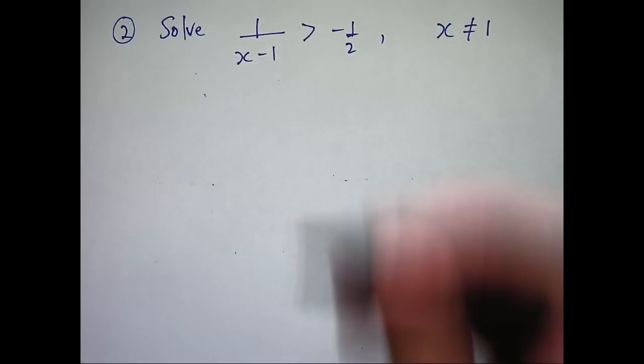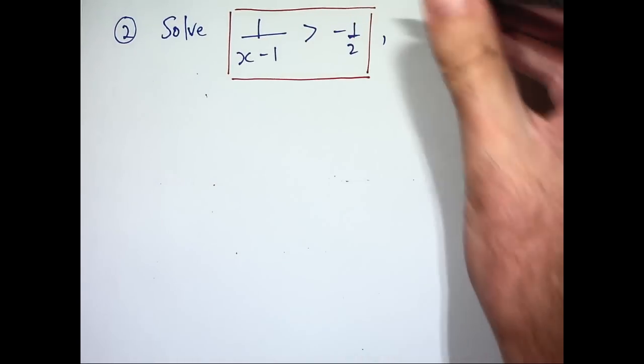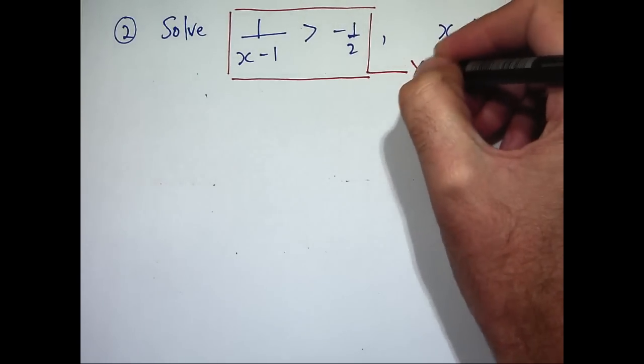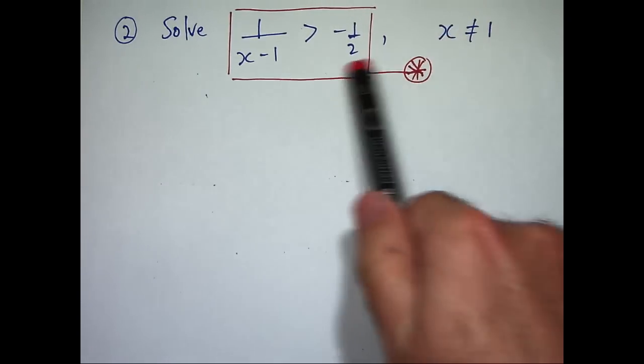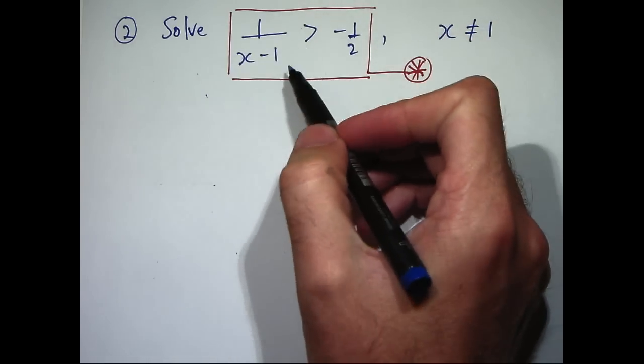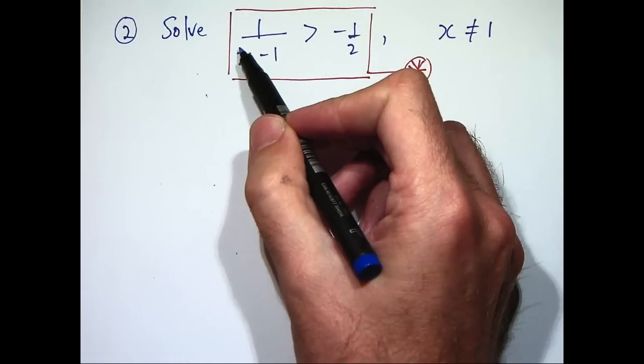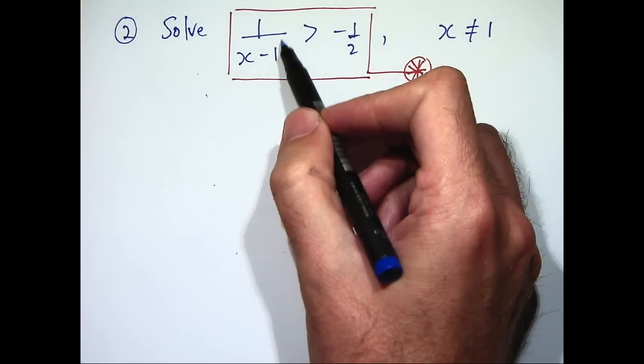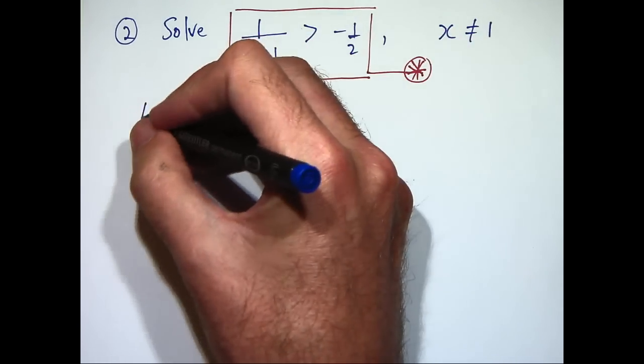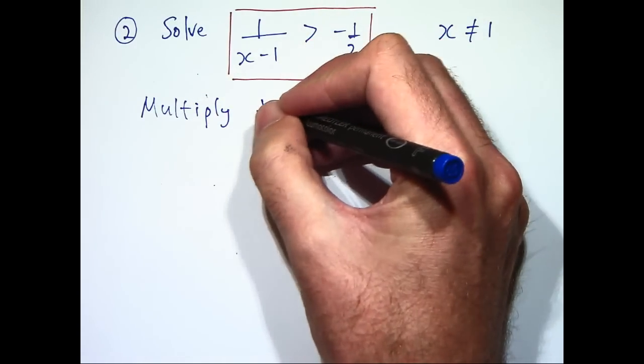So what we would like to do is simplify this inequality as much as possible, because if it's simple then we can more easily solve it. Let's call this inequality star, and one way to simplify these inequalities is to multiply both sides by, in this case, the square of x minus 1. Let's go through and do that and see if we simplify.